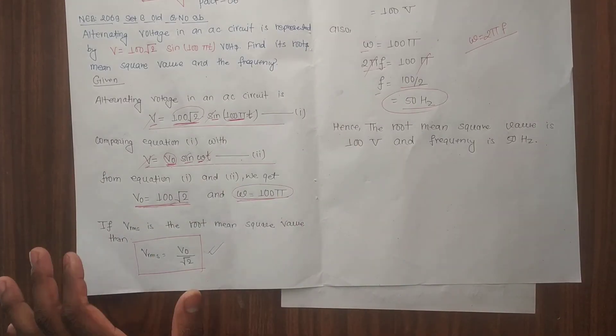Because the peak value of AC is √2 times its RMS value.